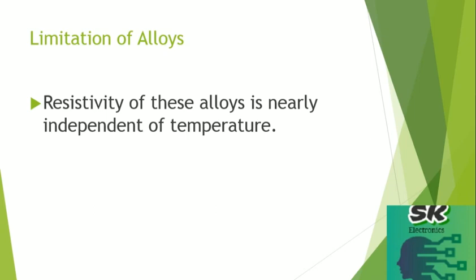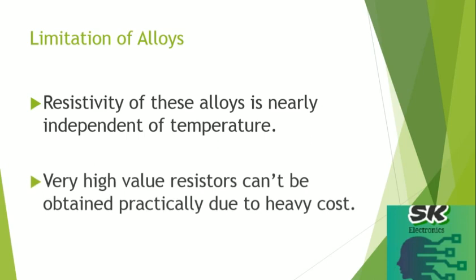During an experiment you don't want the resistance of your circuit to change once current starts flowing. Temperature increases because heat is produced when current flows, and if alloy resistors are used, your experimental setup will give false results. Another limitation of alloys is that very high value resistors like one mega-ohm or one giga-ohm cannot be obtained because the cost becomes very high and it is very impractical.